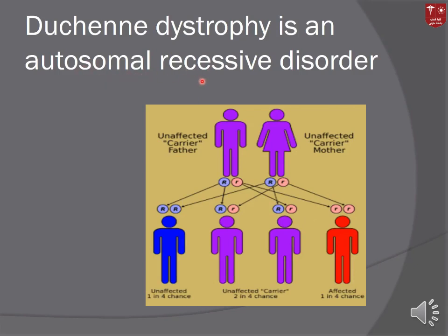It is an autosomal recessive disorder, meaning it requires two affected alleles. If both parents are carriers — not diseased themselves — and they have four children, one of them will have the disorder. This is what autosomal recessive means: it affects approximately 25% of individuals from two carrier parents.